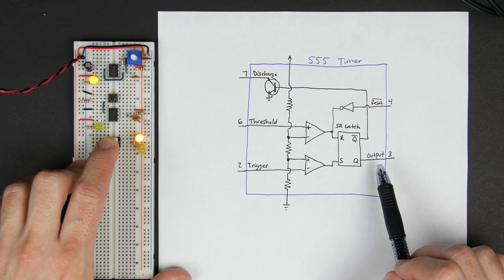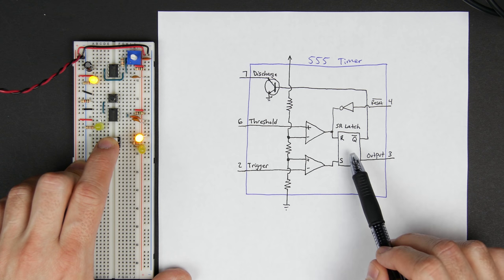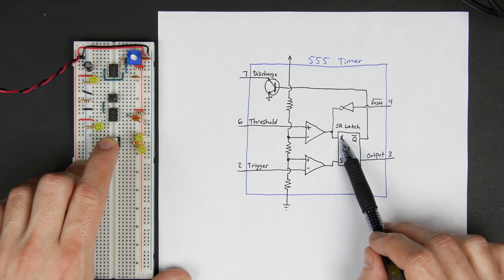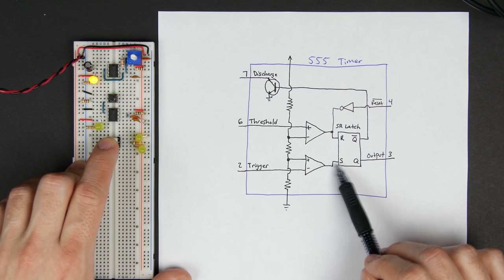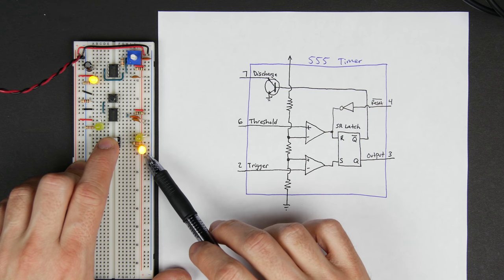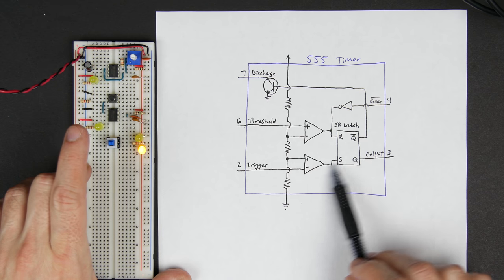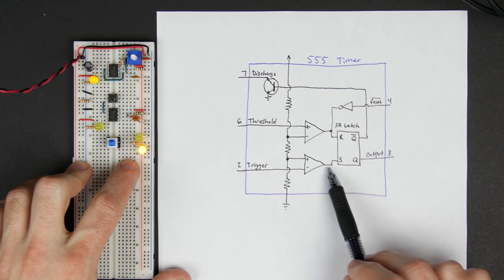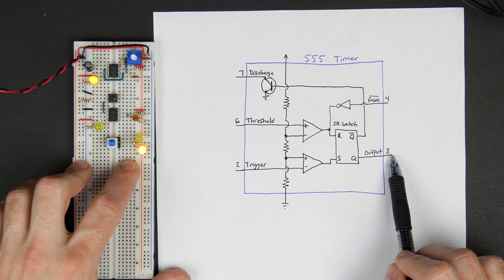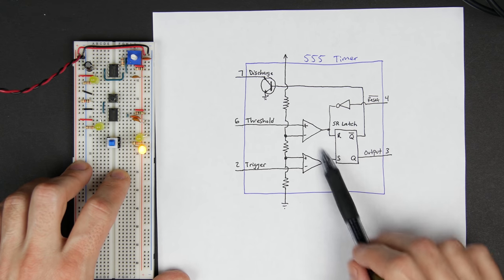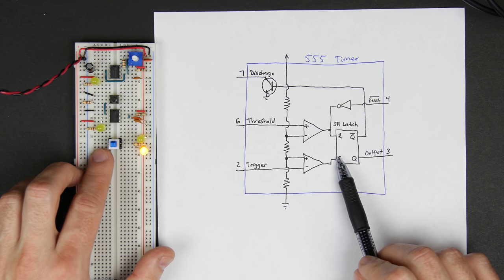And then the same thing, as we push this, and then as we gently let go, the reset goes off, we're still reset, right? Because we haven't set it yet. And then even if there's some bouncing, as we go into the set state, it doesn't matter, because as soon as it first sees that set state, boom, the output comes on. So we can use an SR latch as a debouncer with a switch like this.